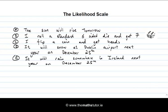Event D: it will snow at Dublin Airport next year on December 25th. That's certainly a possibility, but history would indicate that while it does happen occasionally, it is unlikely. Event E: it will rain somewhere in Ireland next year on December 25th. Given that Ireland has a fairly wet climate during the winter, it's safe to say that it's likely that it will rain somewhere in Ireland next Christmas Day.